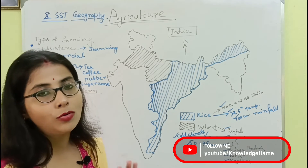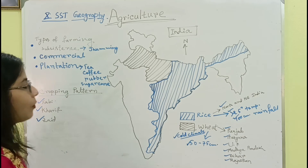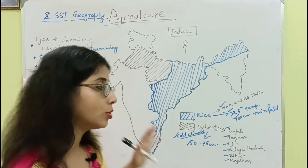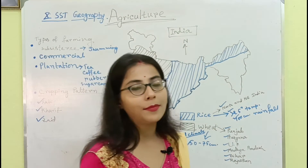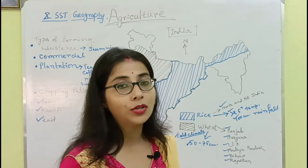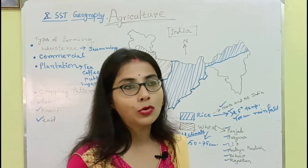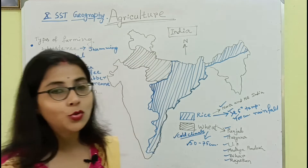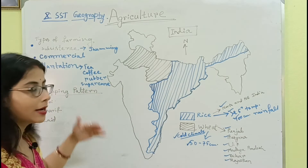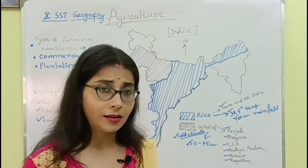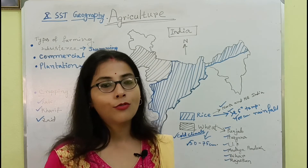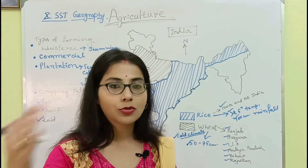Now the third type is plantation farming. Plantation means production done for economic benefit, and it is also part of commercial farming. This plantation farming was introduced in our country by the British government. Since India was a British colony, they wanted to utilize every single piece of land to generate more money. That's why they started plantation production of tea, coffee, rubber, sugarcane, and also banana — which in the southern part of our country is also called a plantation crop. All plantation products are sold to foreign markets and are therefore called exporting products.